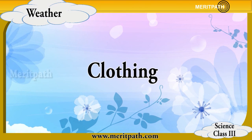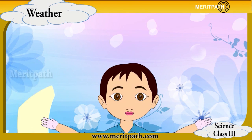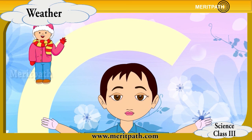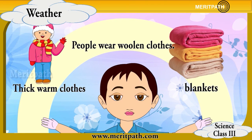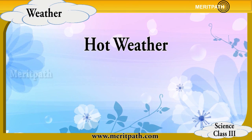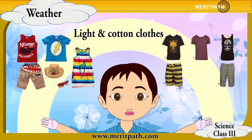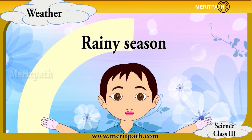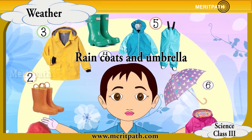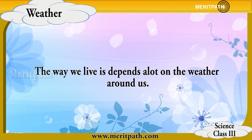We also prefer our clothes accordingly: when it's cold we wear warm clothes, and when it's hot we wear light and cotton clothes. During the rainy season, raincoats and umbrellas are used. The way we live is dependent a lot on the weather around us.